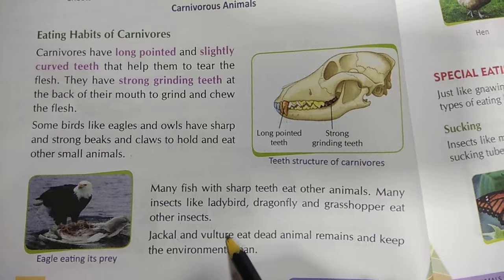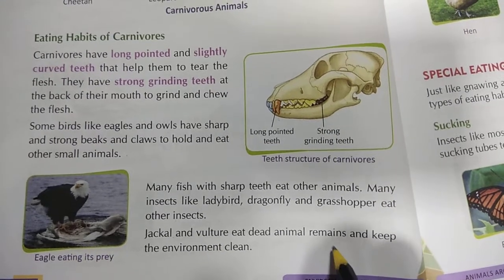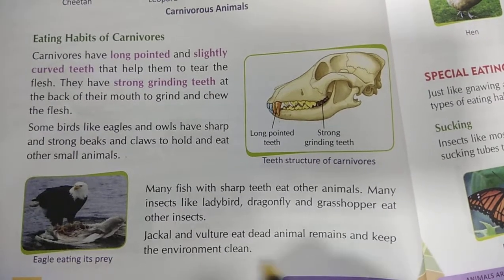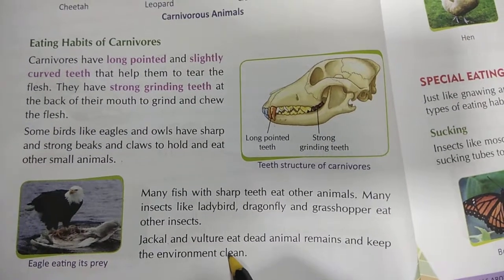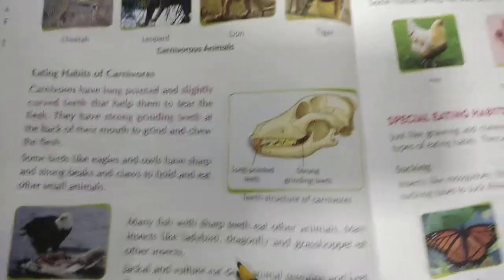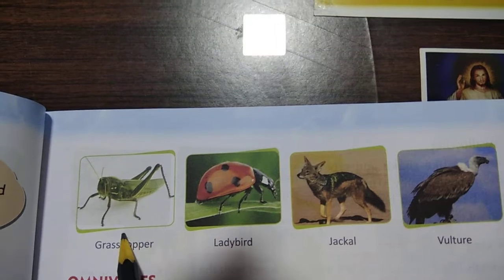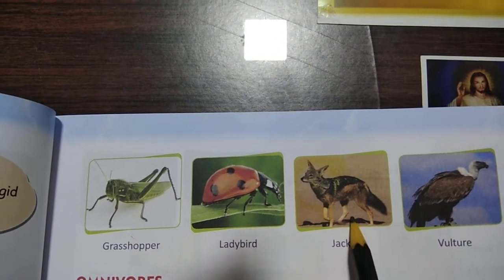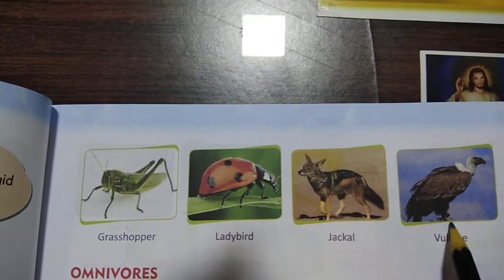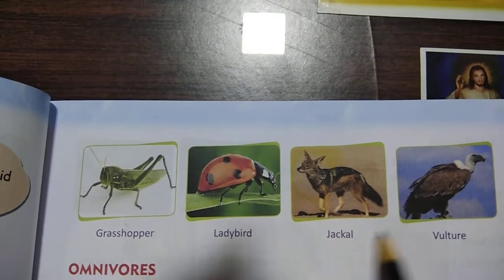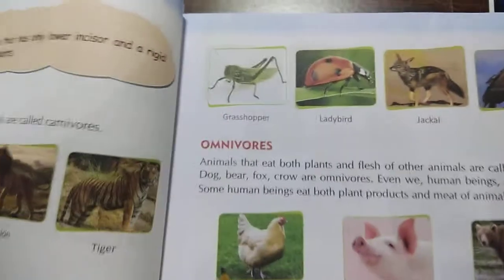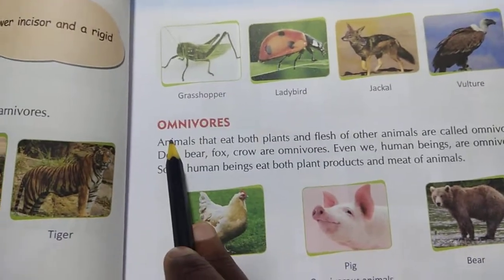Many insects like ladybird, dragonfly and grasshopper eat other insects. Jackals and vultures eat dead animals and their remains, helping keep the environment clean. Some examples shown include grasshopper, ladybird, jackal and vulture. Now we see the third group — omnivores.